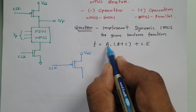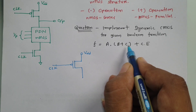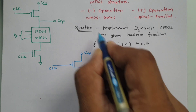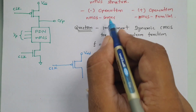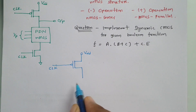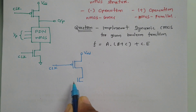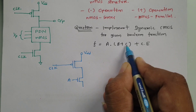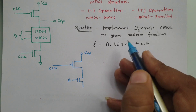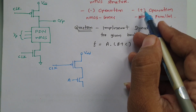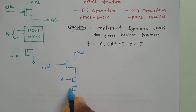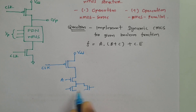Looking at a·b + c: the 'a' is there with a dot operation, meaning series with b + c. So we have input 'a' and then 'b + c' in series. Now 'b + c' uses the plus operation, so NMOS should be in parallel. Therefore b and c are connected in parallel — this implements a·(b + c).